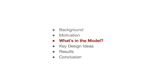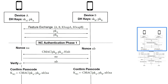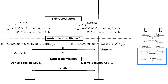Before I talk about the key design ideas, let me give a brief overview of what is in our model. Numeric comparison has various phases. Beginning with two devices discovering each other and sharing the public components of their keys, the authentication phase begins where both devices generate random nonces, exchange public components with the keys and these nonces, then calculate the same passcode on both devices. The user is given the choice to press yes or no on whether the passcode matches. If the user completes that, the shared key is calculated on both sides, followed by another authentication phase verifying that all exchanges are correct, after which data transmission can begin.